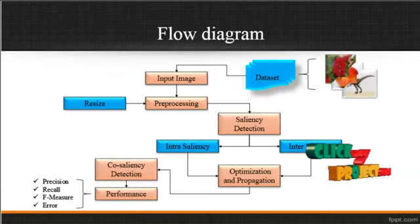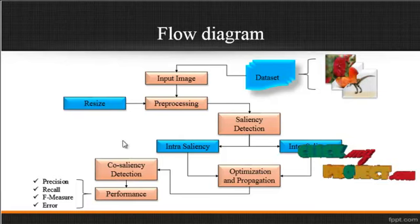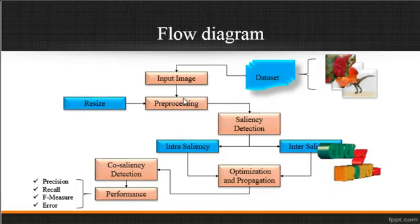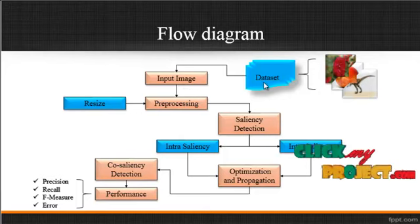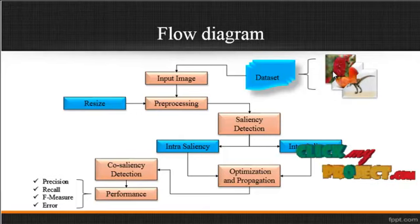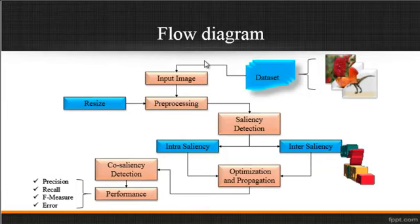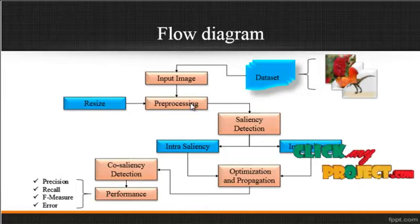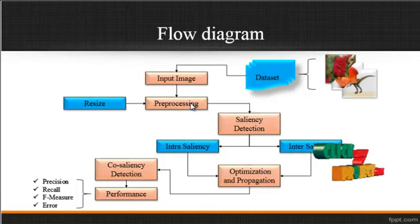Now we are going to discuss about the flow diagram for the process. This is the overall flow structure. At first, the input image is taken from the dataset. The dataset is a folder which consists of several images. We have several images in the dataset; select any one image from the dataset. After selecting the image, pre-processing is carried out.